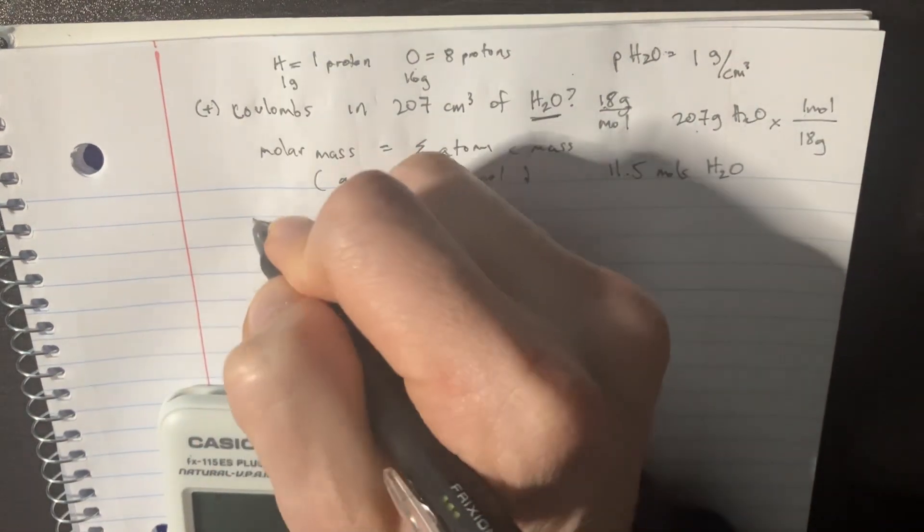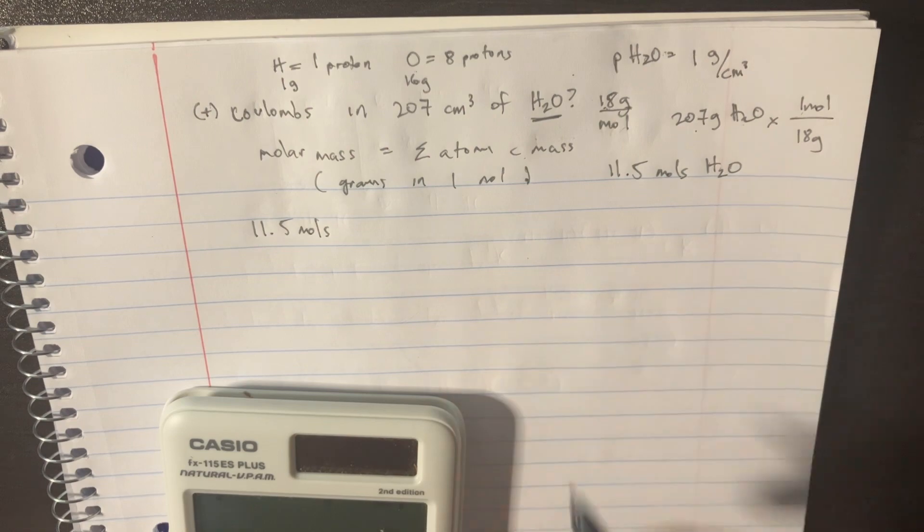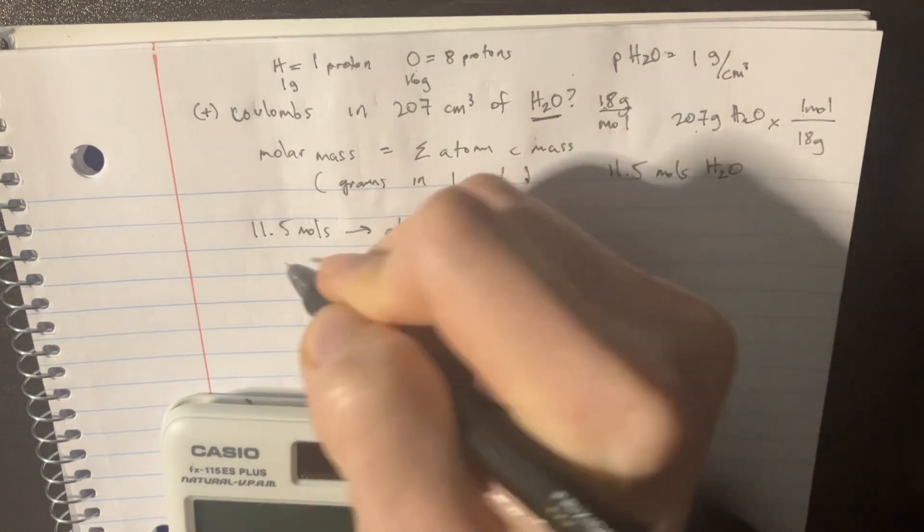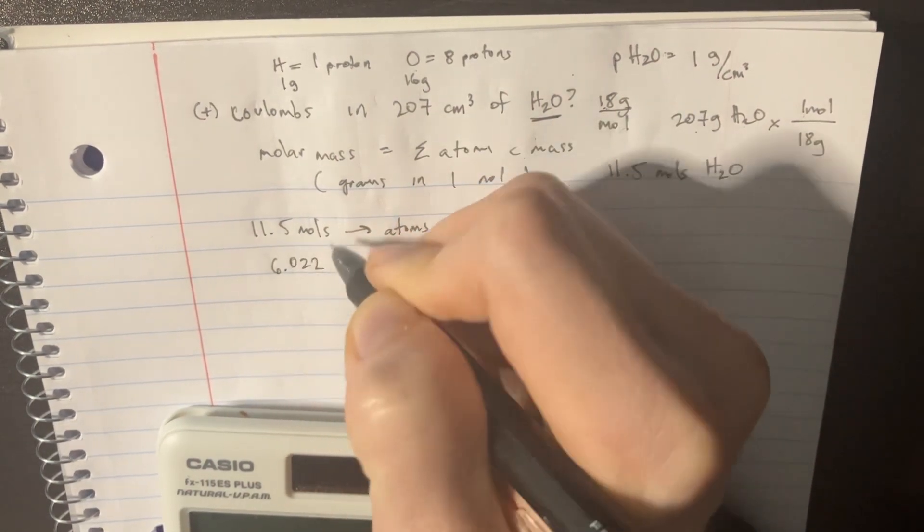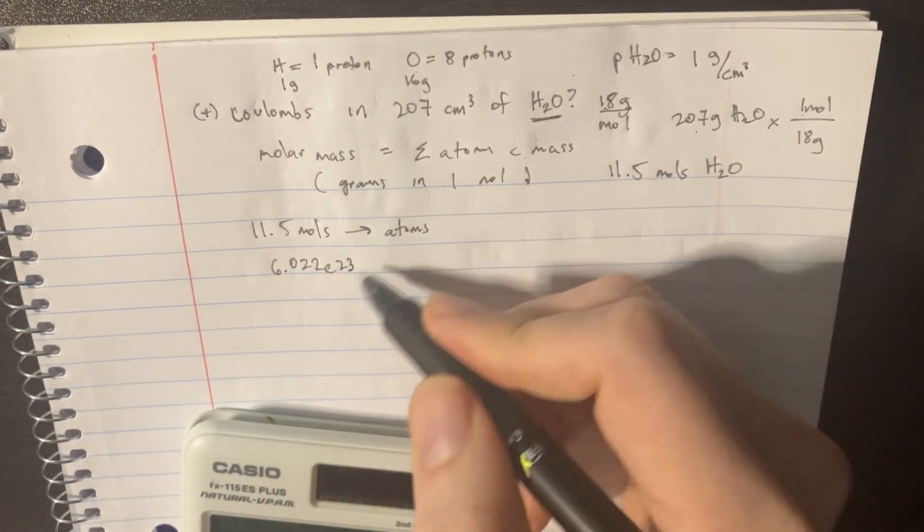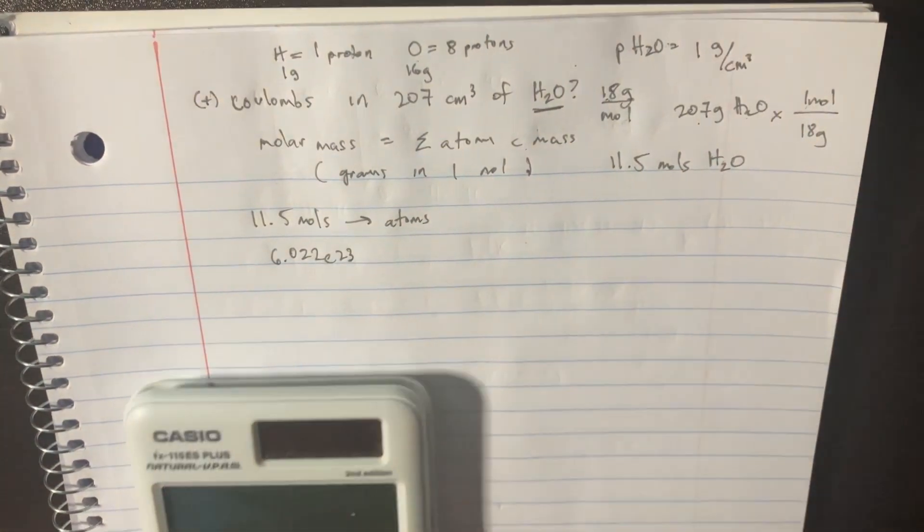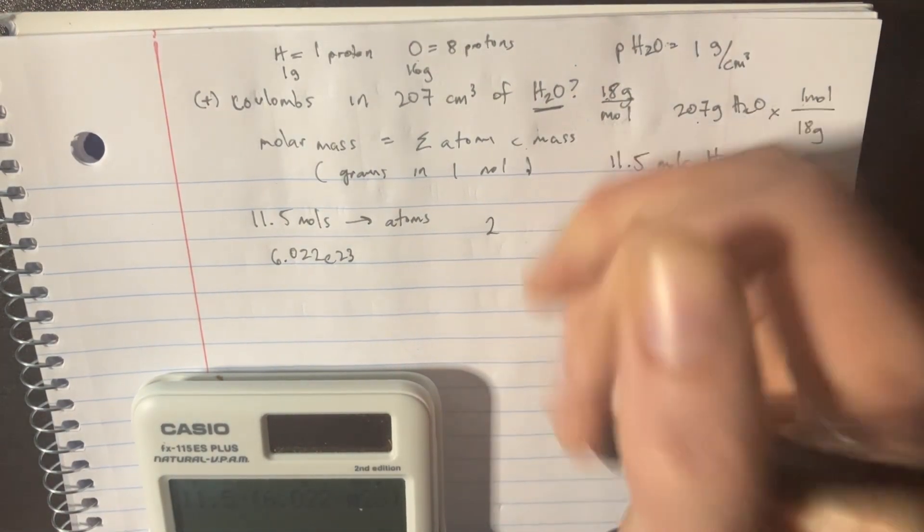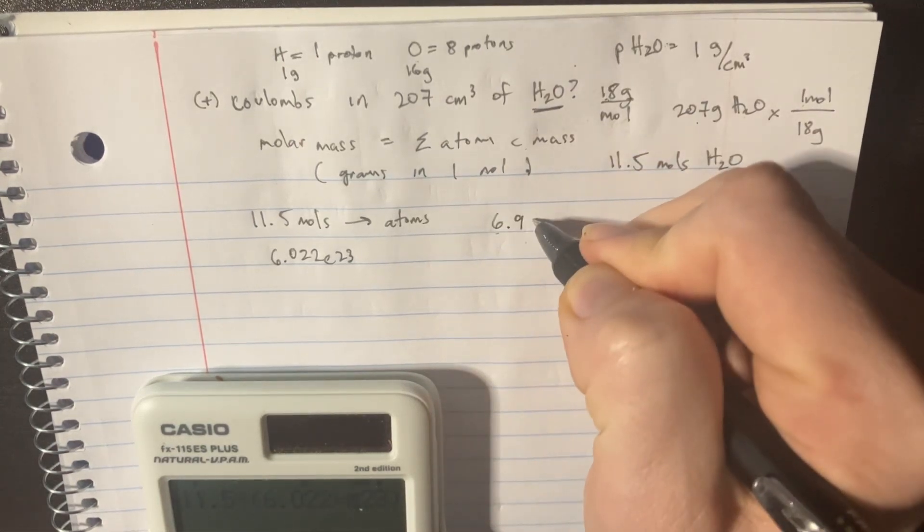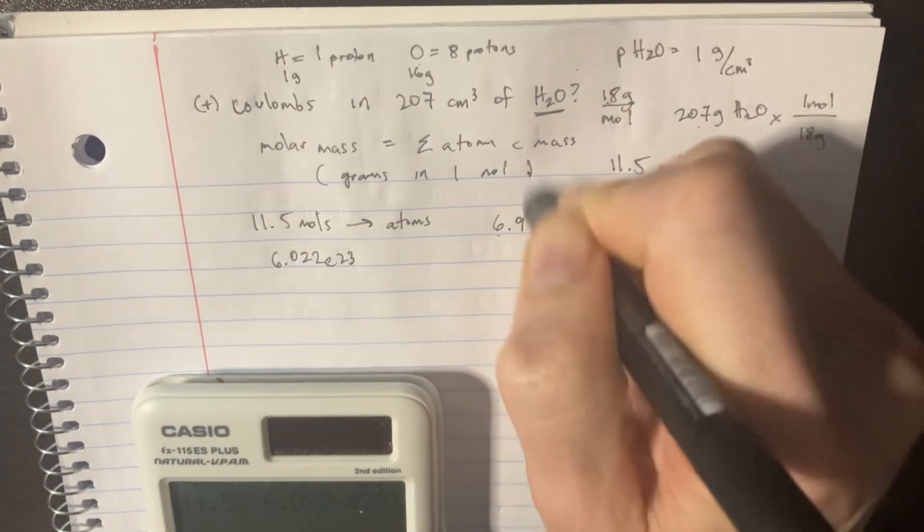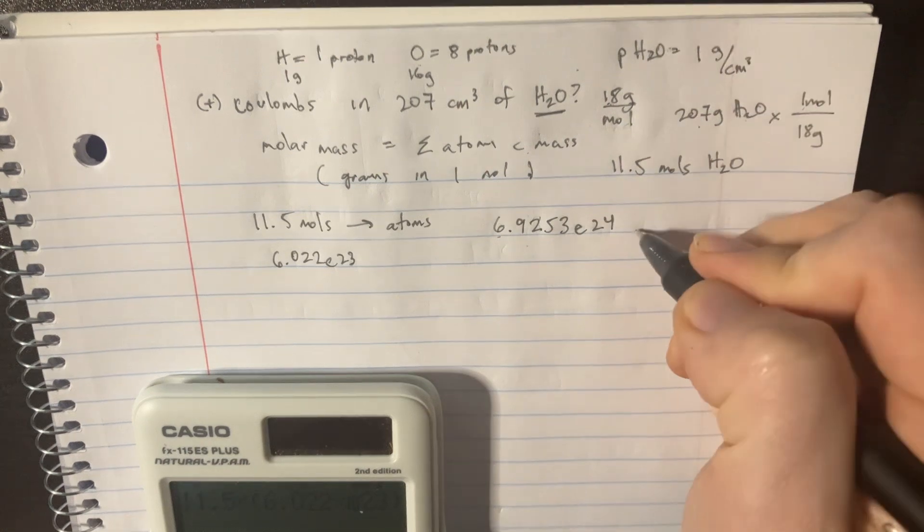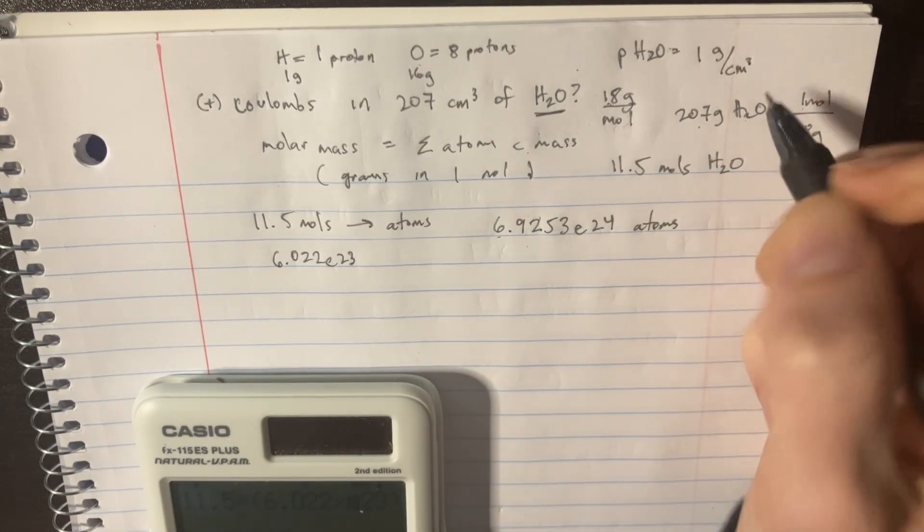Now, if there's 11.5 moles, we need to convert this to the number of atoms. And remember, if we want to convert moles to atoms, then we need to use Avogadro's number, which is 6.022 e to the 23rd. This is how many atoms are in a mole. And so if we multiply those two together, 11.5 times 6.022 e to the 23rd, then we discover that it has 6.93 to the 24th. And this is how many atoms of H2O are in there.